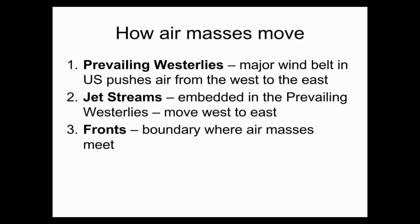They move in three ways. We have prevailing westerlies, which is a major wind belt in the United States that pushes air from the west to the east. The jet stream is actually part of the prevailing westerlies, moving from west to east. It's along this jet stream that most of our fronts meet, and fronts are just those boundaries where air masses meet.